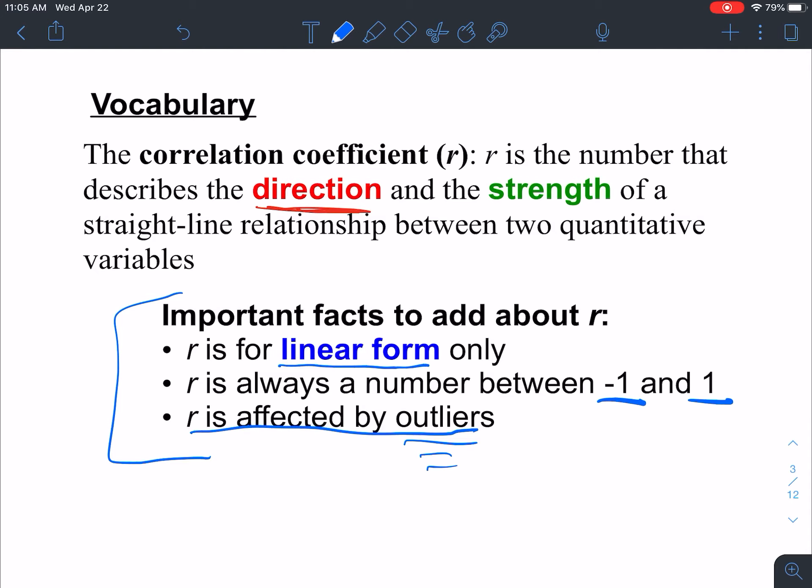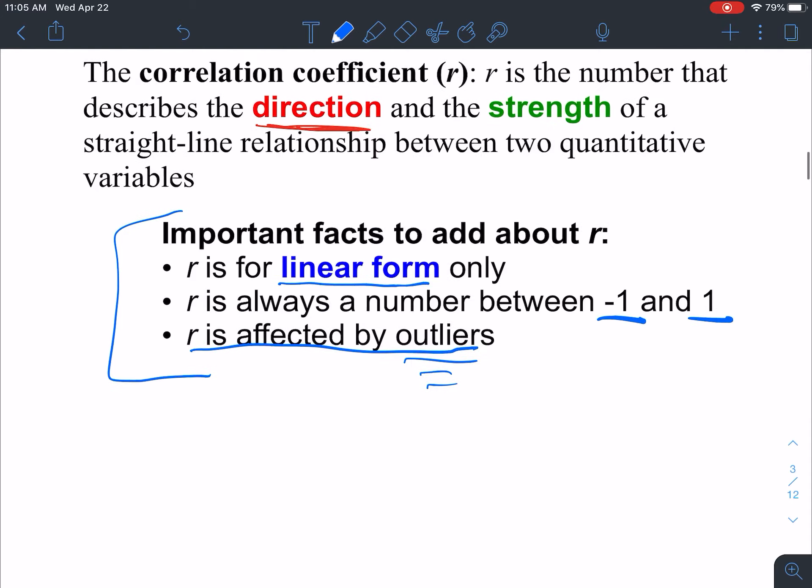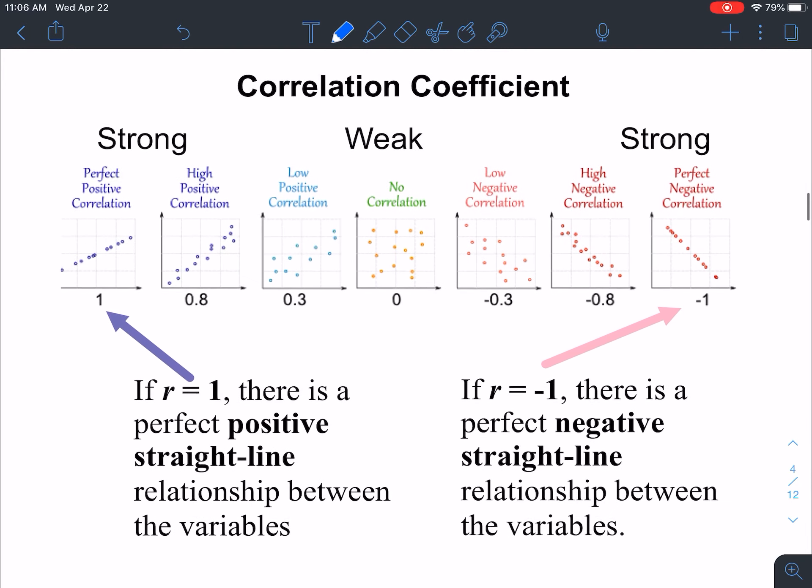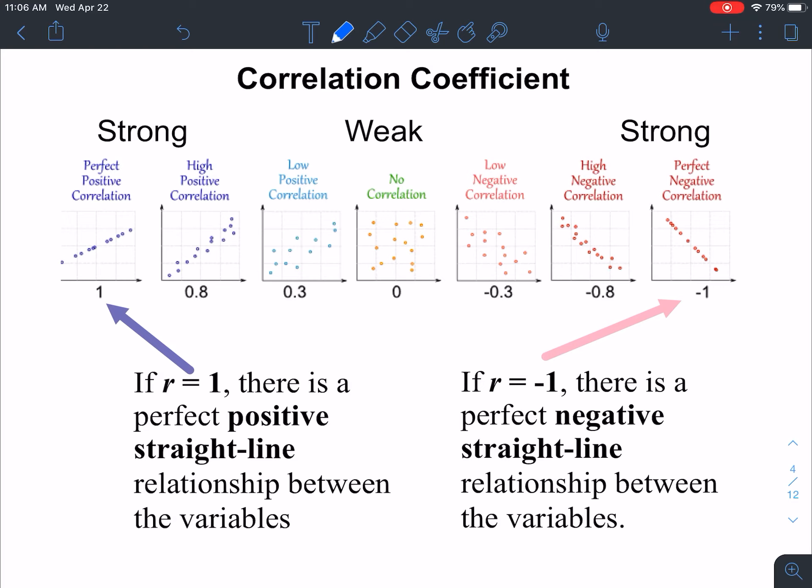So moving forward here, this is that chart I was talking about. Notice we have some scatter plots here. If we look on the far left, an R value of 1 is where everything is almost in a perfect straight line and it's going up. From left to right, it's going up in a positive direction. Notice on the right-hand side, a negative 1. Notice they're very similar to one another, but the reason it's negative is because from left to right, it's going down in a negative direction. R equals 1 positive straight line, R equals negative 1 negative straight line relationship.